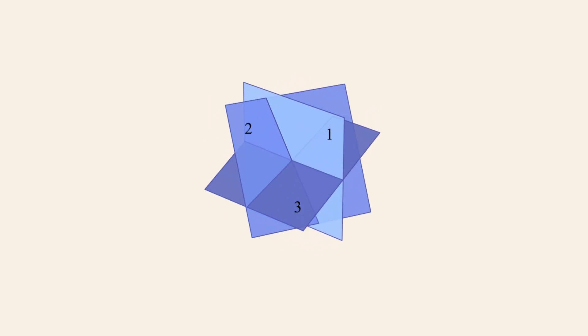One possibility is that no two planes in the system are parallel and all three planes intersect at only one point. In this case, the system will have one unique solution.